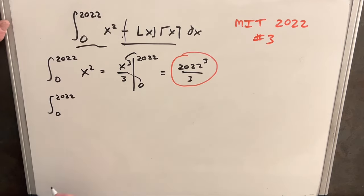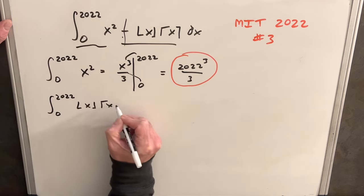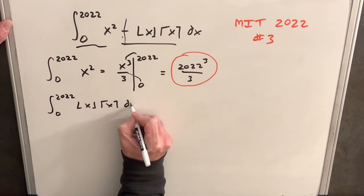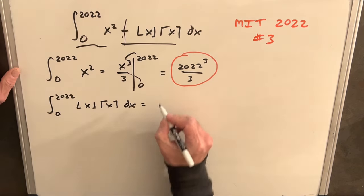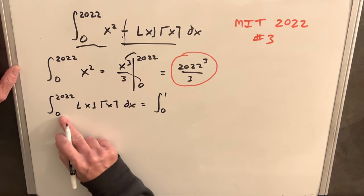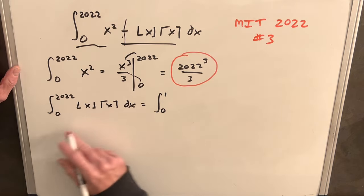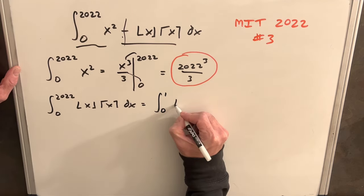Now the real challenge is the second part. We have 2022 to 0, and we're integrating the floor function times the ceiling function of x, dx. There's not a great way to actually integrate floor and ceiling functions, but what we can do is break it up case by case. We can break up our limits into like 2023 different integrals.